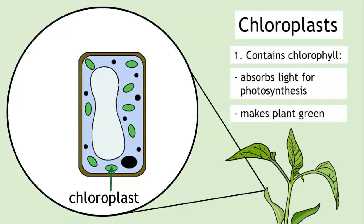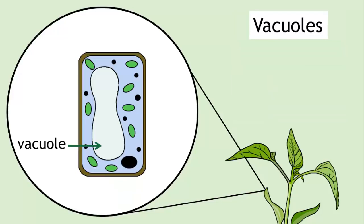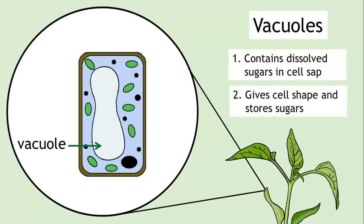Finally, plant cells also contain structures known as vacuoles. These are filled with a watery substance which contains dissolved sugars, called cell sap. The role of the vacuole is to provide support for the cell shape and to store sugars.